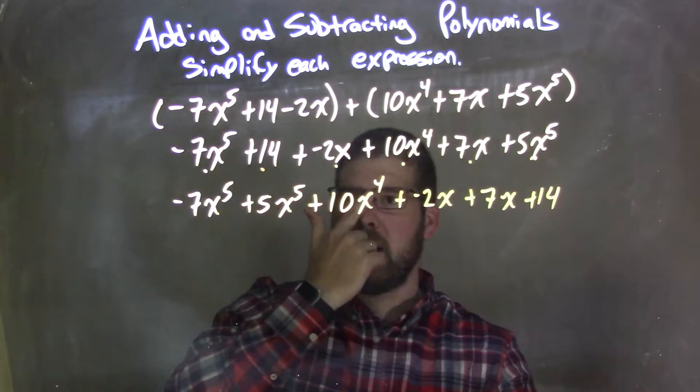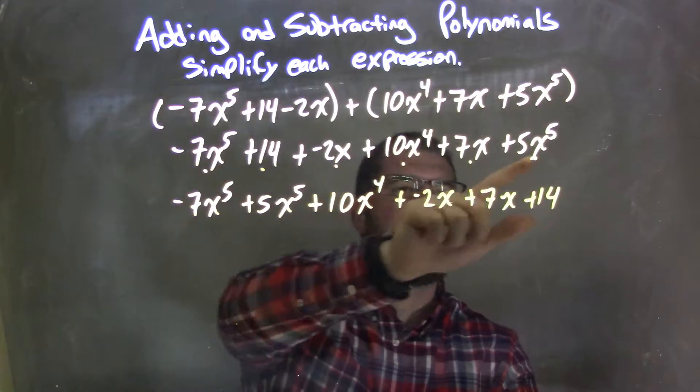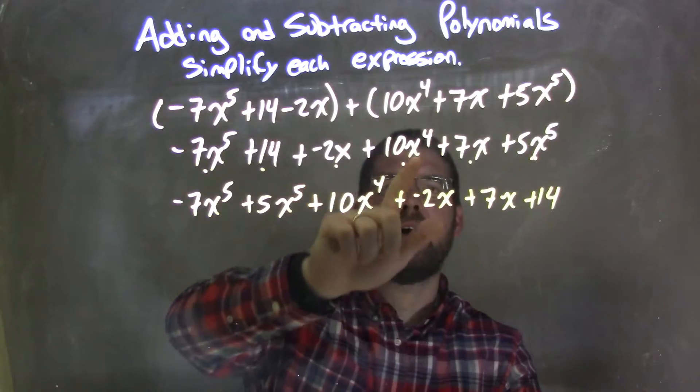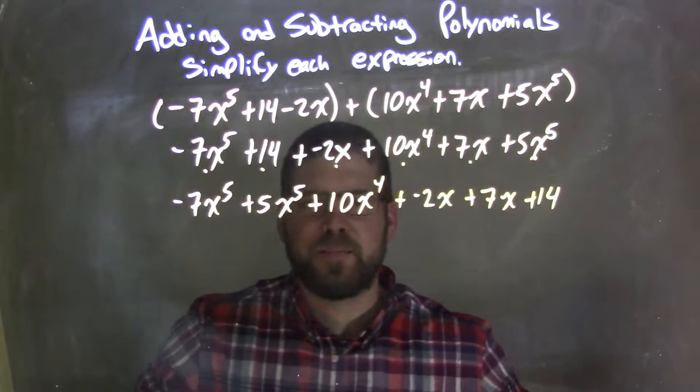Let's do a double check now. I use my dot system to double check I brought everything down: -7x^5, 5x^5, 14, -2x, 10x^4, 7x, 5x^5. Fantastic.